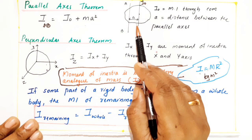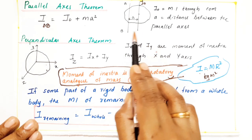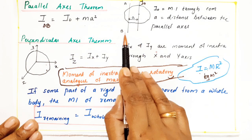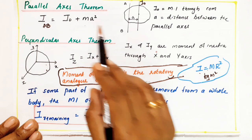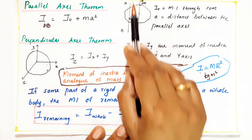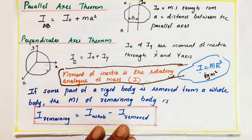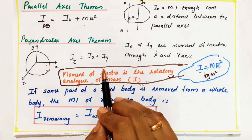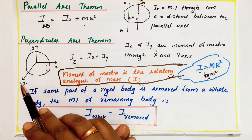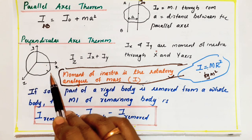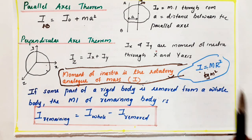Parallel axis theorem: let I₀ be the moment of inertia through the center of mass. If the body is rotating about axis AB, which is parallel to the axis through the center of mass, then I_AB equals I₀ plus M·a², where a is the distance between the parallel axes. Perpendicular axis theorem: for three mutually perpendicular axes X, Y, Z, the moment of inertia about the Z-axis equals I_Z = I_X plus I_Y.